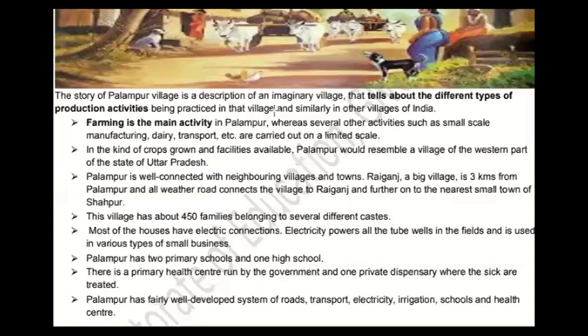In this worksheet, there is a village called Palampur, which is an imaginary village — it doesn't really exist. Its story is told here. In Palampur village, different types of production activities take place — different economic activities. Farming is the main activity in Palampur, whereas several other activities such as small-scale manufacturing, dairy, transport, etc., are carried out on a limited scale.